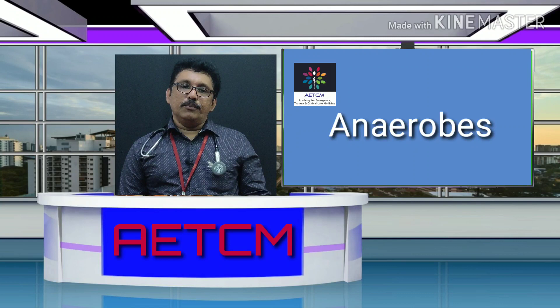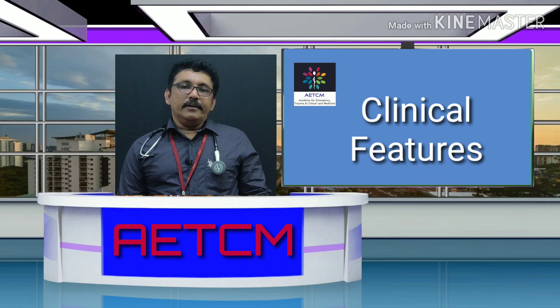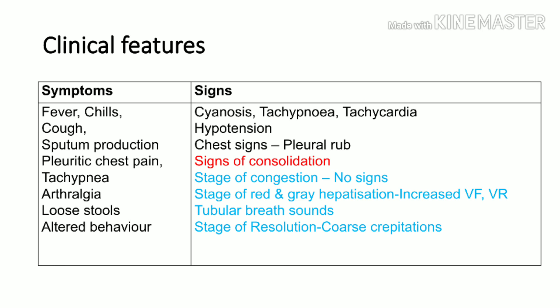Clinical features of pneumonia: atypical pneumonia can present with diarrhea, altered behavior, hyponatremia, and hemolytic anemia. Typical pneumonia presents with fever, chills, cough, sputum production, pleuritic chest pain, and tachypnea. Arthralgia, loose stools, and altered behavior are classically seen in atypical pneumonia. Signs include tachypnea, hypoxia, tachycardia, and hypotension.